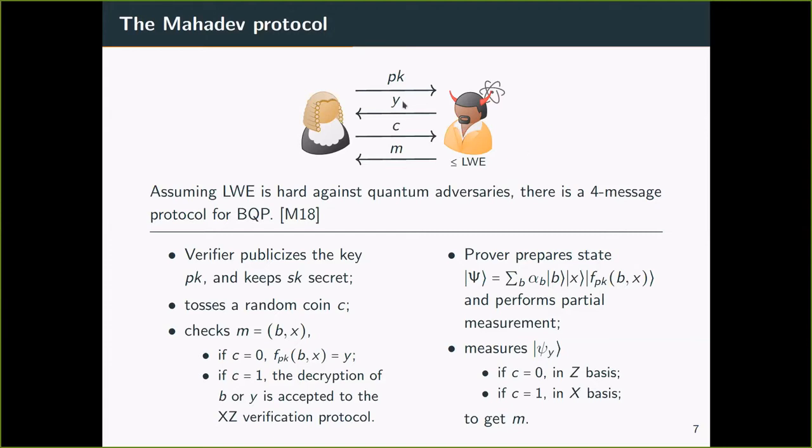After receiving the image Y, the verifier tosses a random coin C, indicating the protocol is entering the test round, i.e. C equals 0, or a Hadamard round, C equals 1. In the test round, the verifier checks whether the prover owns a preimage. In the Hadamard round, the verifier decrypts a transcript into X or Z-based measurement outcome and checks if the outcomes are accepted by the XZ verification protocol.